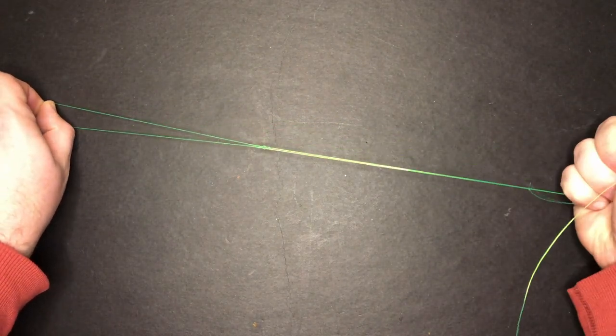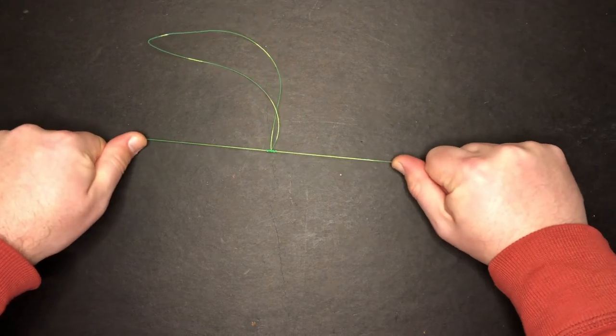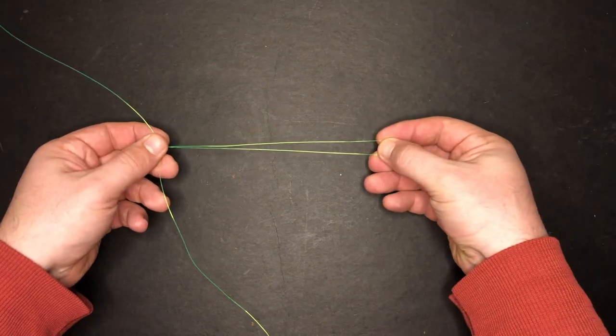Before I pull it fully tight, I'm going to wet the knot with some spit so it slides together easier. Then pull on the main line and tag end in opposite directions. That'll close the loop. Now we have our first dropper loop.